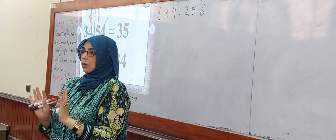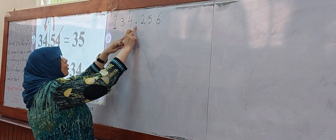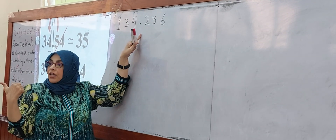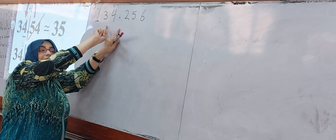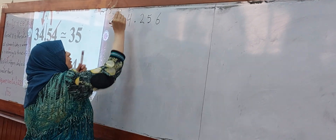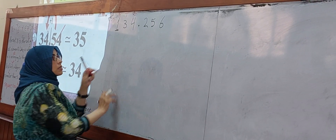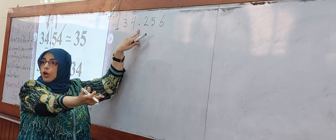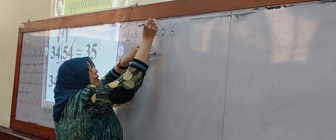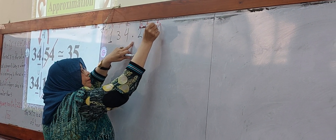First of all, you have the center of the number — the decimal point. On the left-hand side from the point, start with ones, tens, hundreds. On the right-hand side from the point, start with tenths, hundredths.